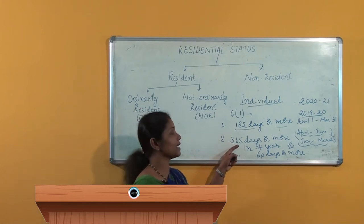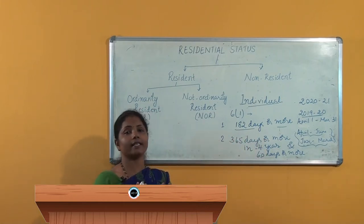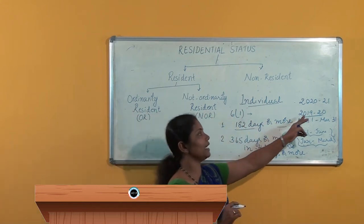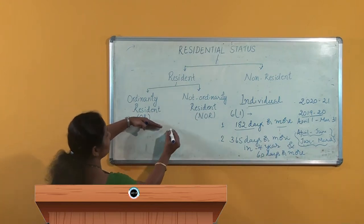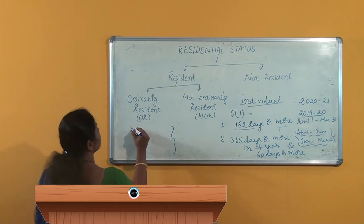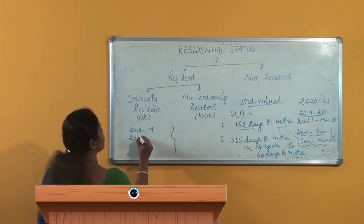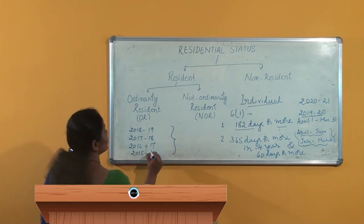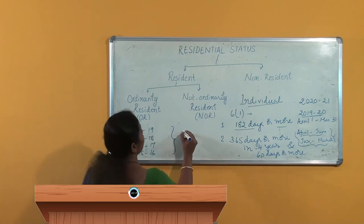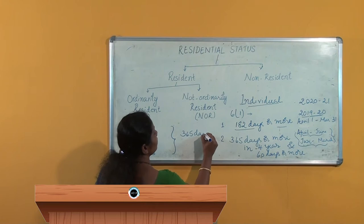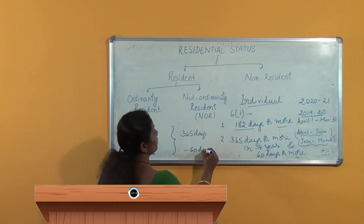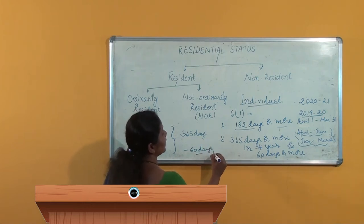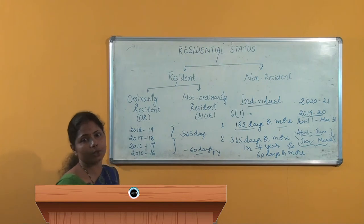It states that an individual must stay in India for 365 days or more in 4 years preceding the previous year. As I said earlier, the previous year is 2019–20. Preceding that, the 4 years are 2018–19, 2017–18, 2016–17, and 2015–16. In these 4 years he must stay in India for 365 days or more, and along with that, a minimum of 60 days or more in the previous year — that is, in 2019–20.